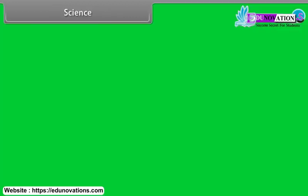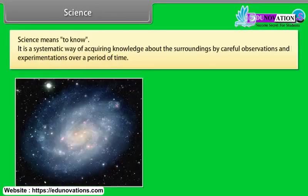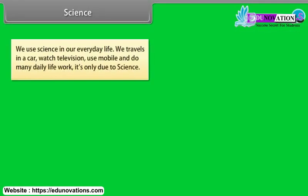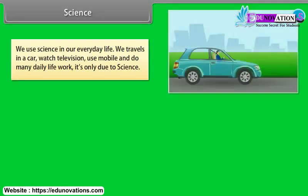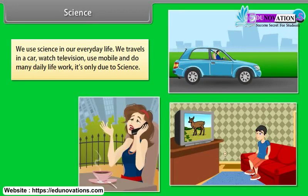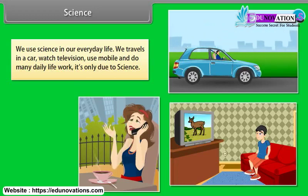Science means to know. It is a systematic way of acquiring knowledge about our surroundings by careful observations and experimentations over a period of time. We use science in our everyday life — we travel in cars, watch television, use mobile phones and do many daily life activities. It is only due to science.